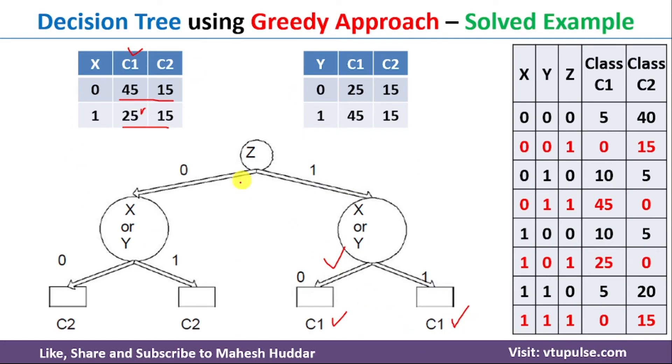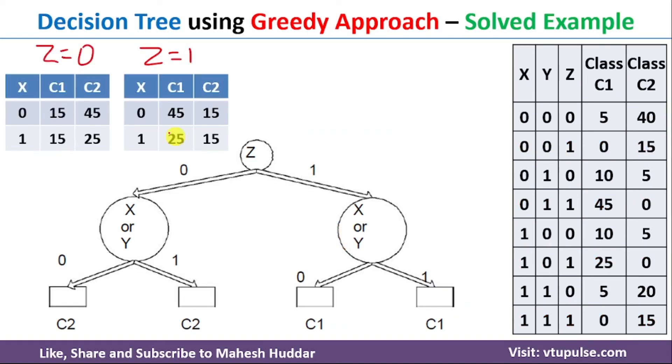This is the complete decision tree for the given dataset. Now coming back to the last part of this discussion: calculating the overall error rate for the decision tree we have built.